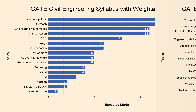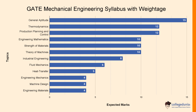Let's check the GATE Mechanical Engineering syllabus with weightage. For Thermodynamics, you can expect questions of 12 marks. For Production Planning and Control, you can expect questions of 12 marks. For Engineering Mathematics, you can expect questions of 10 marks.